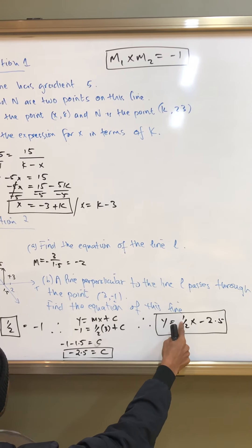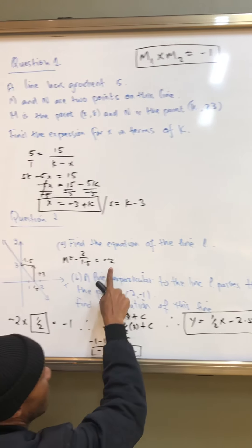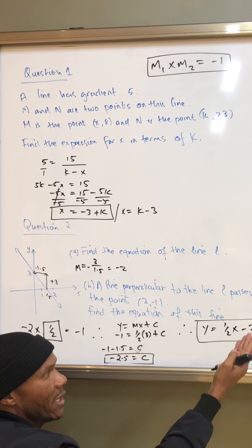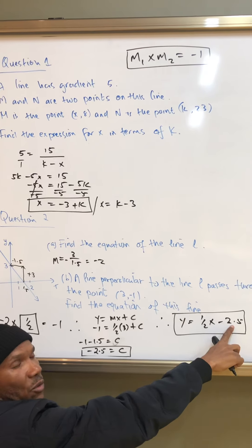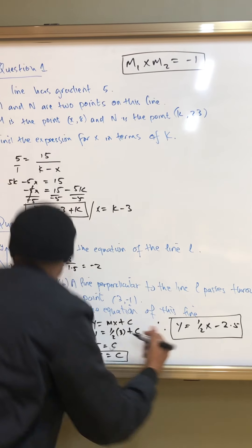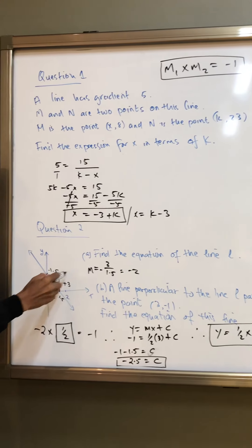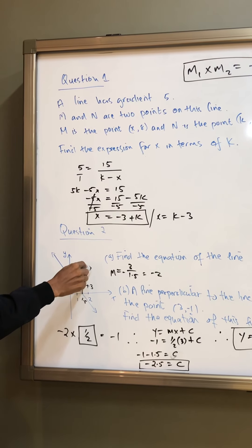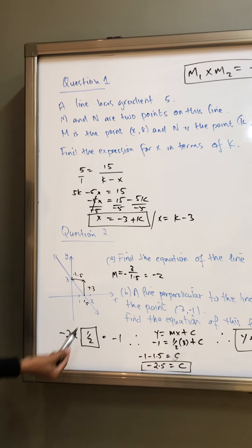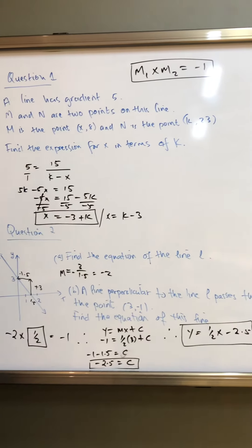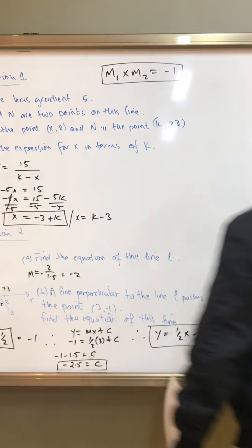You see the gradient. You multiply the gradient of this. Multiply by that gradient. You get negative 1. And it passes through negative 2.5. And it makes sense because the gradient would be, it would pass through going down. All right. Cool. Let's go to question 3.